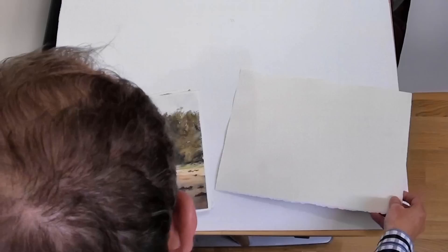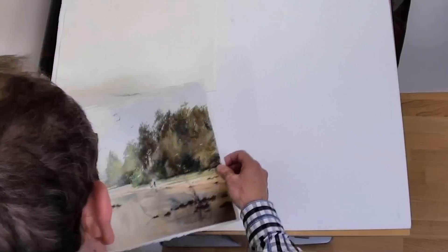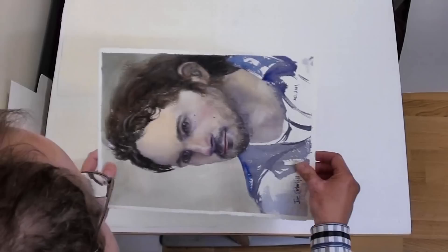Alright, so I have four paintings here that I want to flatten. I lay them out on an old sheet of matboard and leave a little gap between each one, like that.